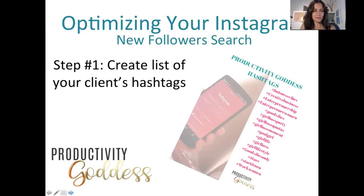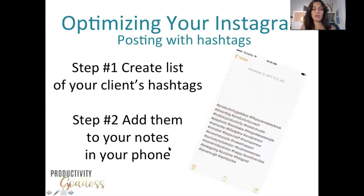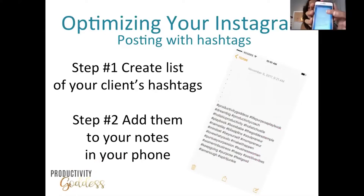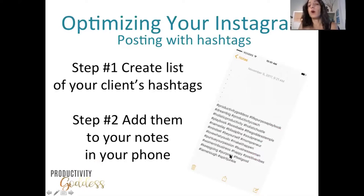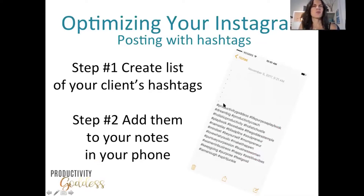Step two is to add them to your notes in your phone. Go into your notes and make sure it's easily accessible. You want to add dots before the hashtags — period, enter, period, enter, period, enter — quite a few of these. Then start your hashtags. The reason for that is when you post them in a comment, you really don't want all the hashtags to be seen right away. You just see these dots, so it doesn't look salesy or too formal.